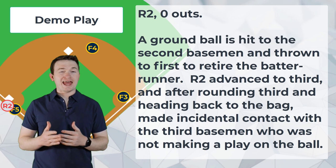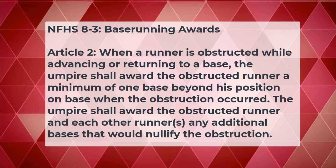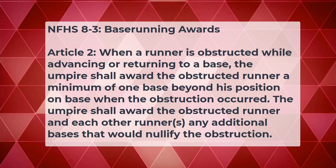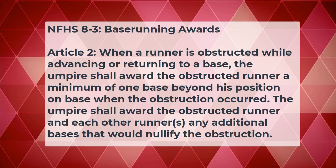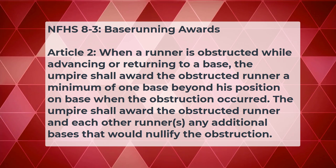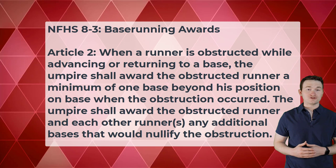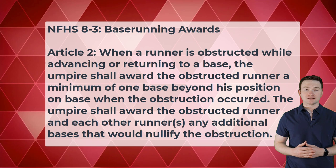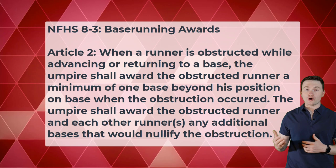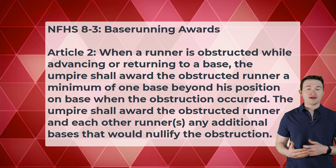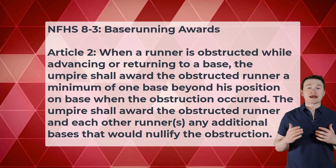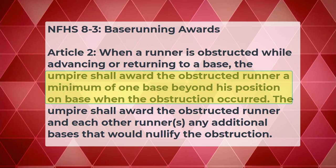Now let's look at the rule in NFHS baseball. Rule 8, Section 3, Base Running Awards, Article 2: when a runner is obstructed while advancing or returning to a base, the umpire shall award the obstructed runner a minimum of one base beyond his position on base when the obstruction occurred. The umpire shall award the obstructed runner and each other runner any additional bases that would nullify the obstruction. Unlike OBR, there's no difference in NFHS rules between obstruction when it occurs to a runner that a play is being made on and a runner that a play is not being made on.